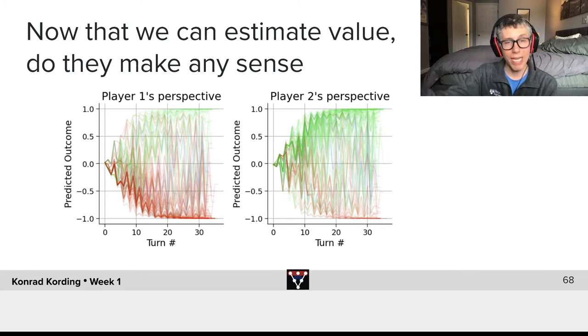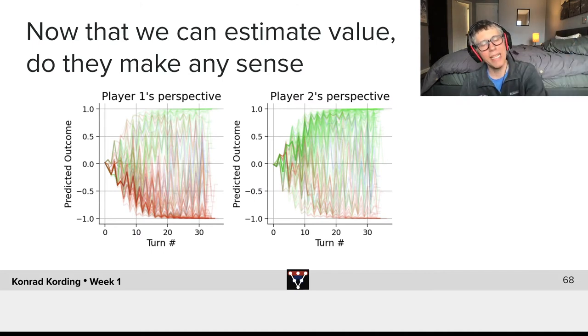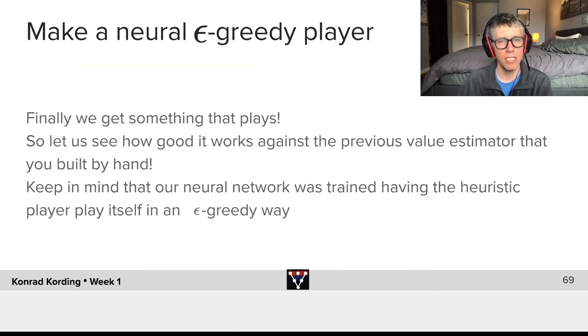The other one is if I look at the green ones, the ones where player one wins, they tend to go up over time. If I take the games where player two wins, they tend to go down over time. This is simply the effect that if I will win in the end and the value function isn't completely bad, it should go in the right direction. So in general this value function seems to roughly have the properties that we should expect.